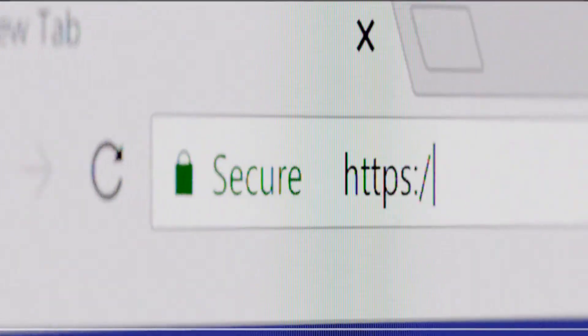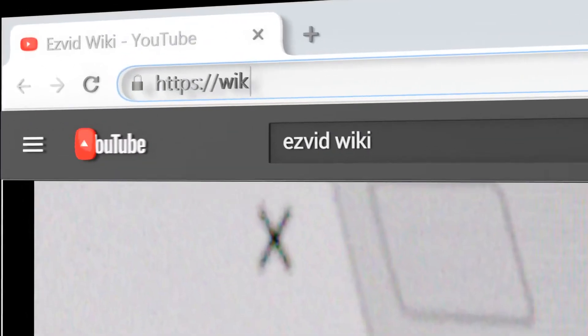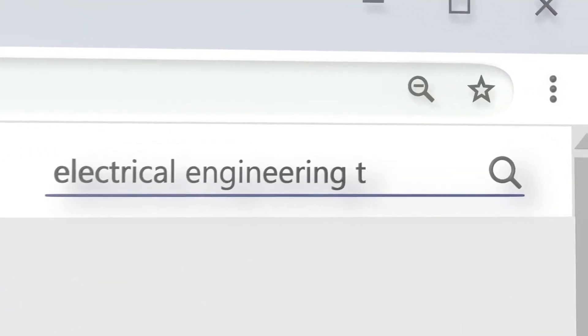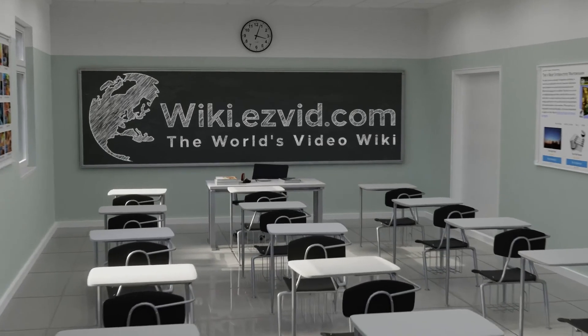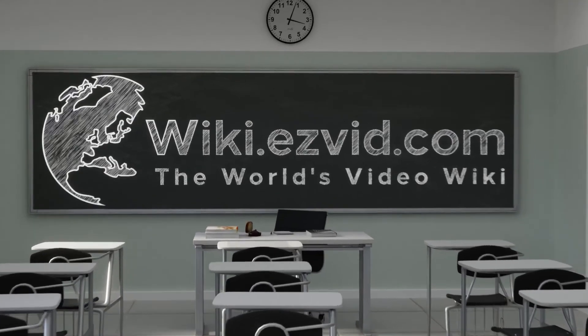Our newest choices can only be seen at wiki.easyvid.com. Go there now and search for electrical engineering textbooks, or simply click beneath this video.